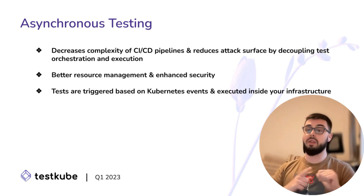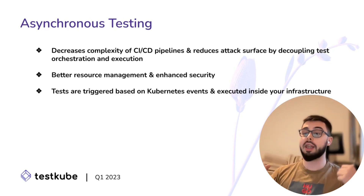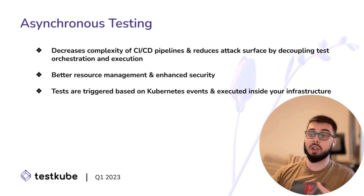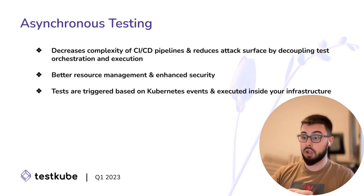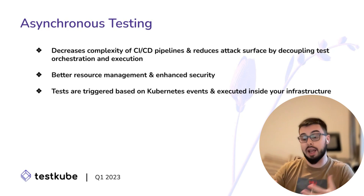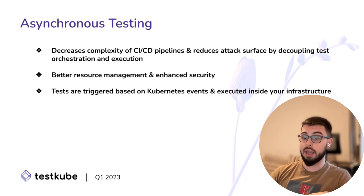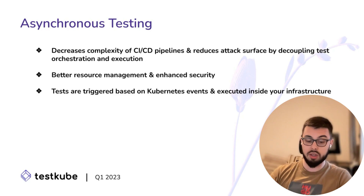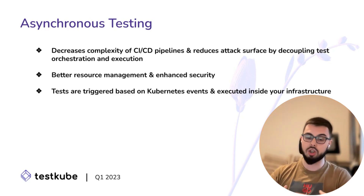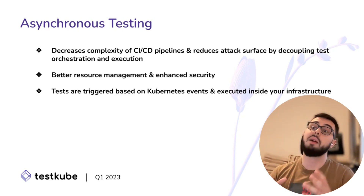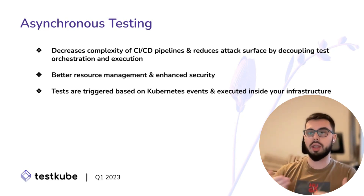What benefits do we get? First and most obvious: we decrease the complexity of CI-CD pipelines, and with that we also reduce the attack surface by decoupling test orchestration and execution. Resource management is improved — we can leverage Kubernetes for resource management and more fine-grained allocate resources for our tests because they run in Kubernetes. We also get enhanced security: our tests run inside our infrastructure, close to our applications, and we can fit them properly based on taints, tolerations, and node selectors — exactly where they need to be executed.